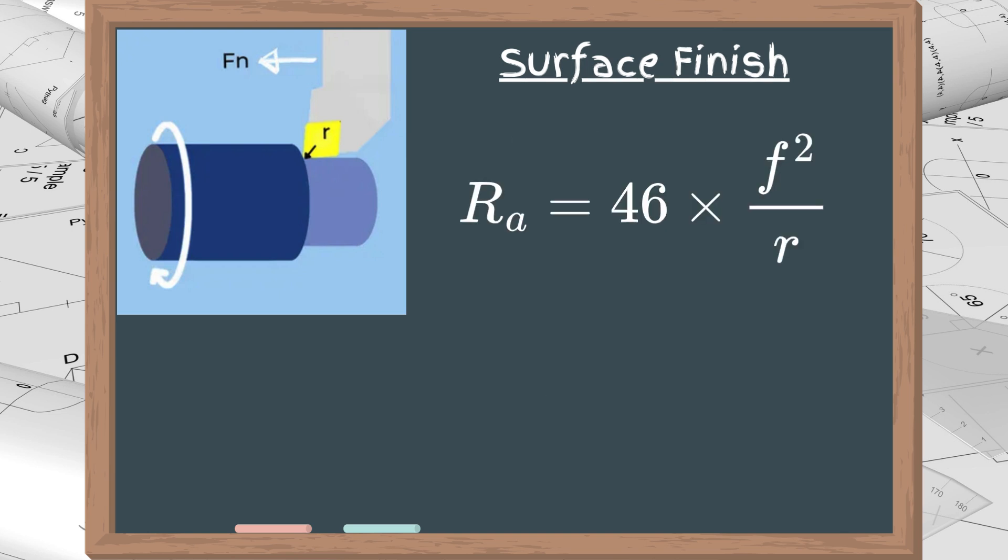You should pay attention to these two important notes. The feed rate is squared in the formula, and therefore has a more significant influence. When you need to improve the surface quality, start by reducing the feed.